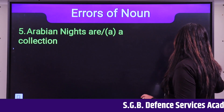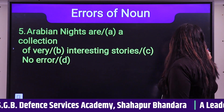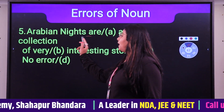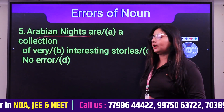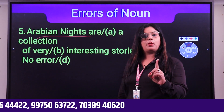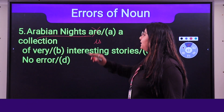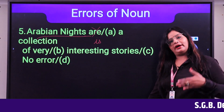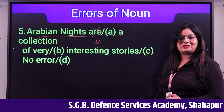A more challenging question from the examination paper: 'Arabian Nights are a collection of very interesting stories.' Arabian Nights is the name of one book — it is singular. Even though 'nights' ends in S, this is a proper noun (book title), not a plural. So 'are' is wrong; it should be 'is.' Students should not be misled by the S in 'nights.'